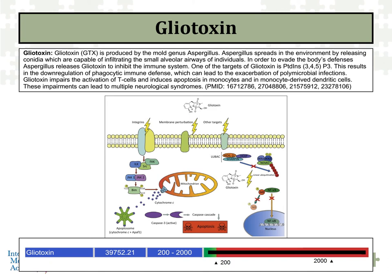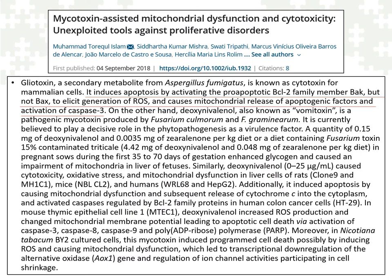Gliotoxin is a very common mycotoxin produced by aspergillus mold. A lot of us are exposed to aspergillus, but not all of us are carrying toxic levels of gliotoxin. For example, this marker here shows gliotoxin at almost 40,000, which is extremely high — from a Great Plains Laboratory mycotoxin profile. One of the things gliotoxin does is attack the mitochondria, causing a release of cytochrome C which can trigger apoptosis. This paper specifically looks at gliotoxin and its effect in inducing cell suicide in relationship to elevations of gliotoxin.